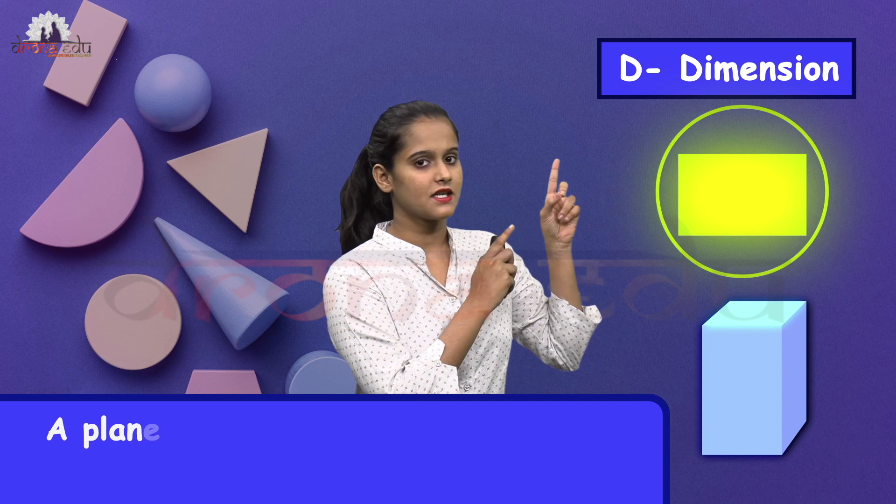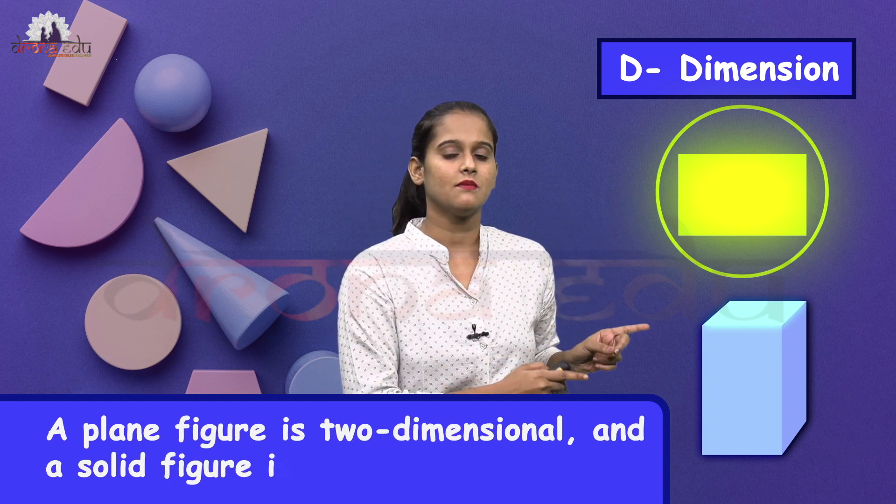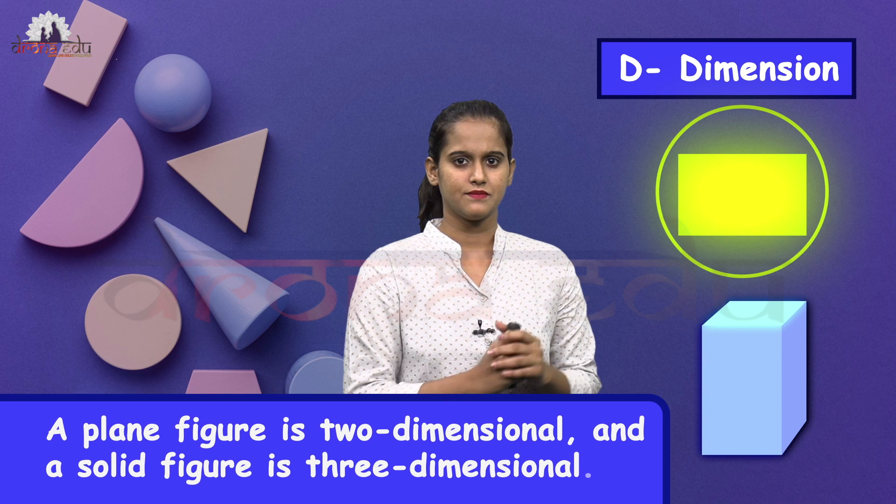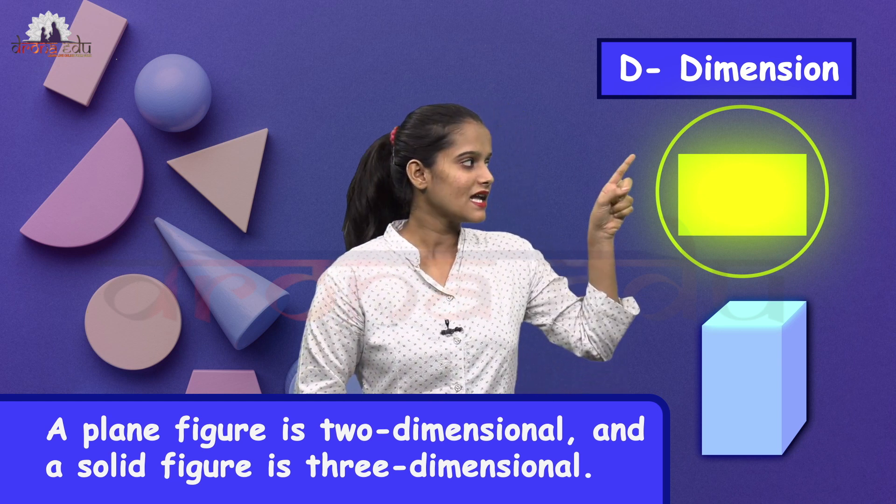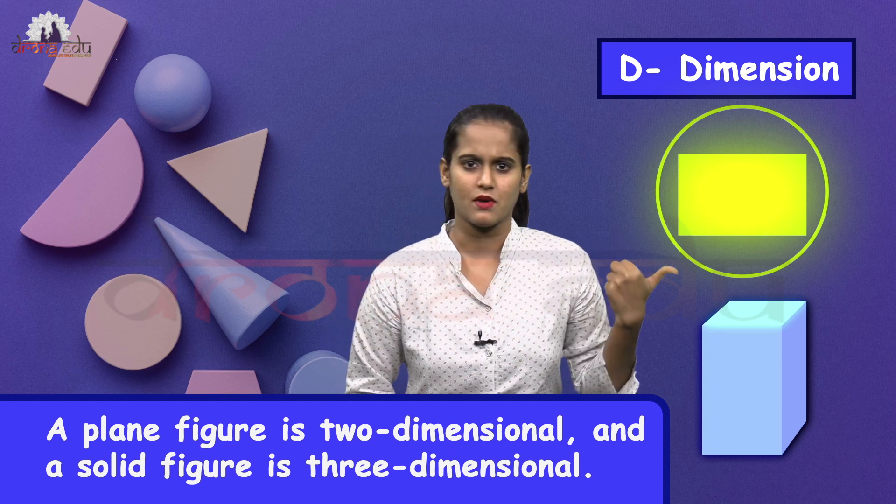So from this, we got to know about the 2D figure and 3D figure. D is nothing but the dimension. The plane figure is a two-dimensional figure and the solid figure is nothing but the three-dimensional figure. The major difference between the plane figure and the solid figure is the dimensions. For plane figures, we have only length and breadth. For solid figures, we have length, breadth, and depth.